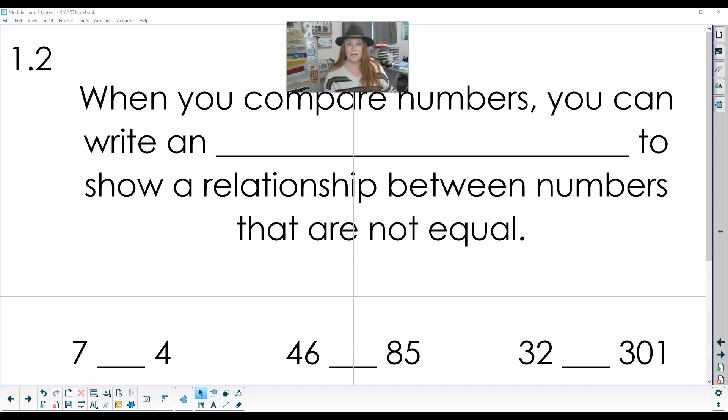So when we compare numbers, you can write something called, let me use my marker, an inequality. In here, you can see that word equal. So we know if something's equal, three and three are the same, they're equal. The word 'in' as a prefix means they are not equal.